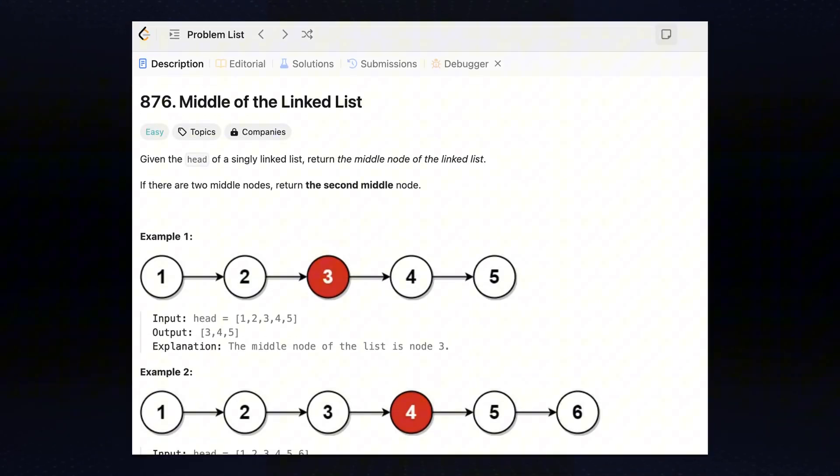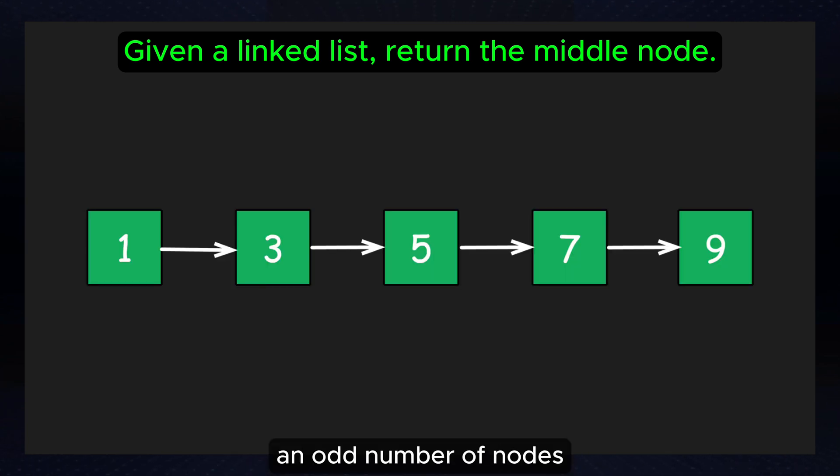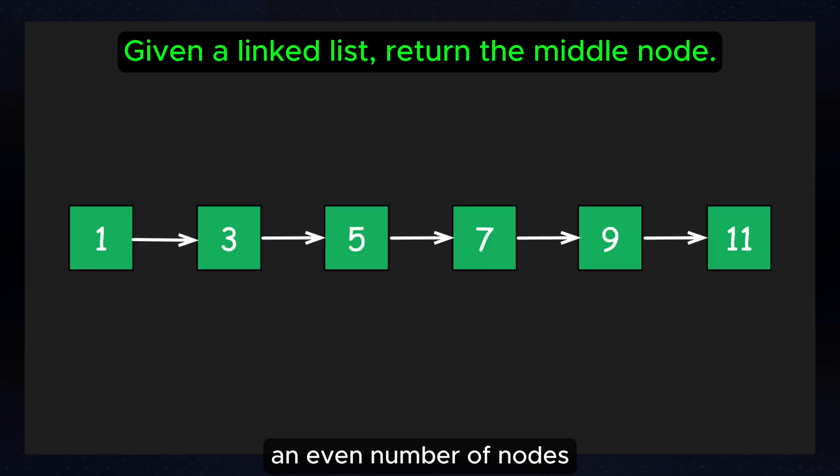Let's move on to the second problem. LeetCode 876, middle of the linked list. You are given a linked list and you need to return the middle node. If the list has an odd number of nodes, return the middle one. But if the list has an even number of nodes, you need to return the second of the two middle nodes.